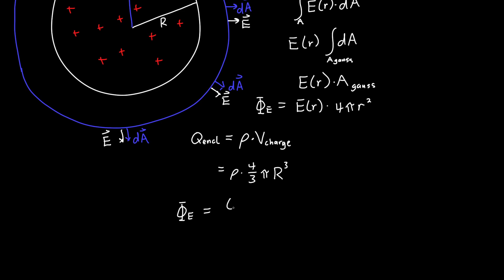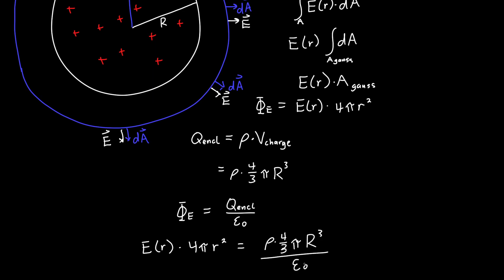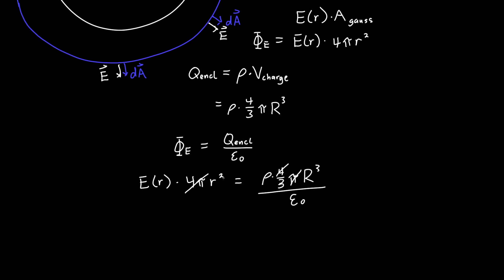Setting electric flux equal to charge enclosed divided by epsilon naught: E(little r) times 4π little r squared equals rho times (4/3)π big R cubed divided by epsilon naught. The 4 and π cancel, but little r squared and big R cubed are different quantities. Dividing both sides by little r squared gives E(r) equals rho R cubed divided by 3 epsilon naught times r squared. This is valid for little r greater than big R.